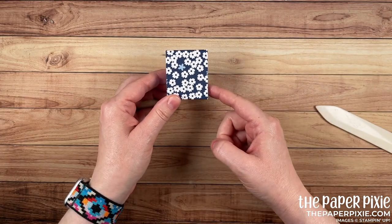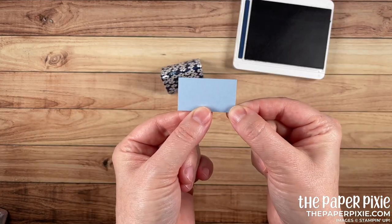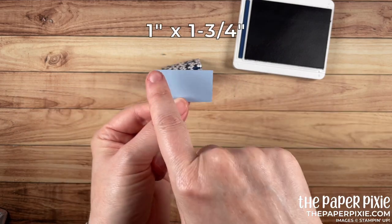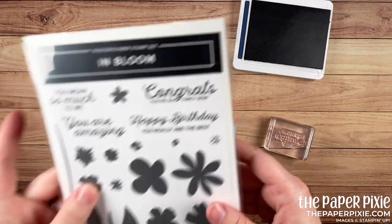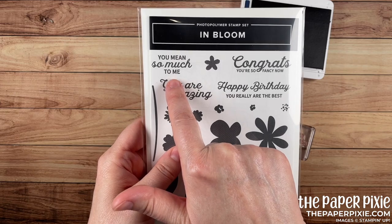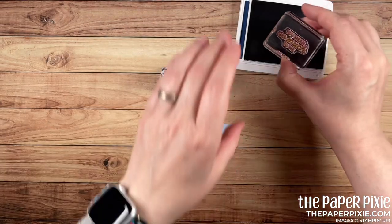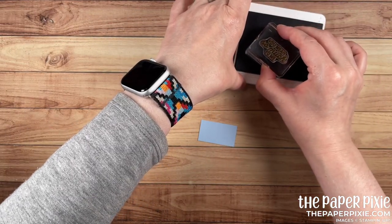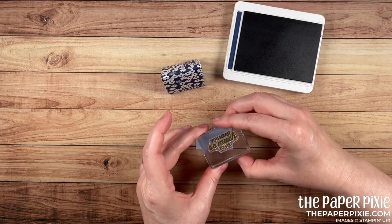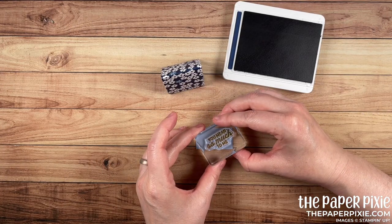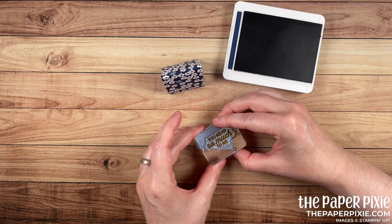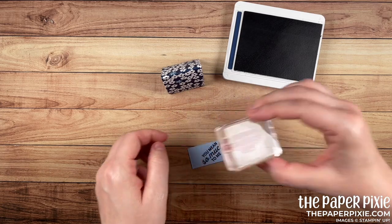Let's go ahead and do some quick decorations. I've got a piece of seaside spray that measures one inch by one and three quarter inches. And I'm using the sentiment, you mean so much to me from the In Bloom stamp set. We're going to ink that up in Night of Navy. And then I'm going to stamp that on an angle off to the right. Like so.